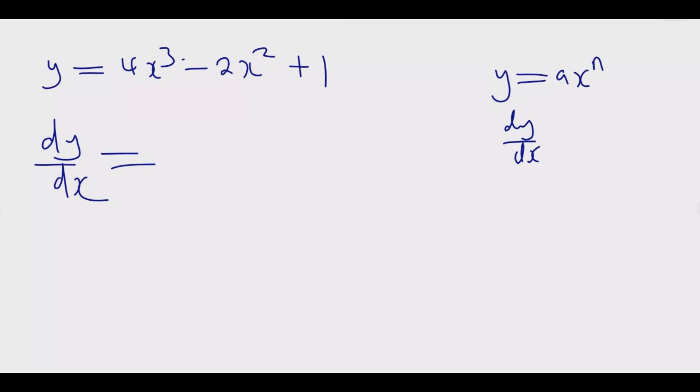So this is the differentiation. You multiply the power with the coefficient, then for the power you subtract 1. So with the same principle, it's going to be: the coefficient 4 multiply by the power 3, then x^(3-1), then minus 2 multiply by the coefficient 2, then x^(2-1), then plus—this 1 means it has x^0 because anything to the power 0 is 1.